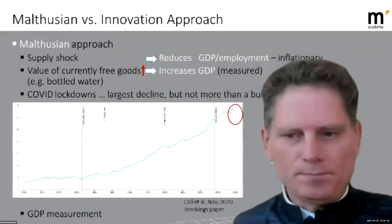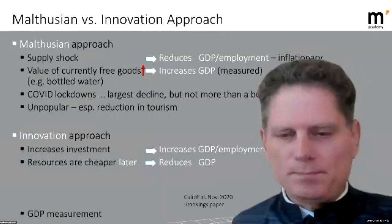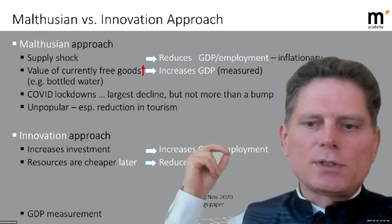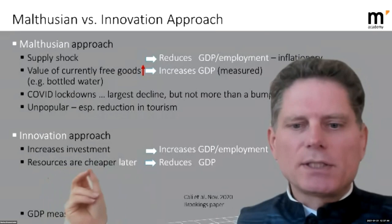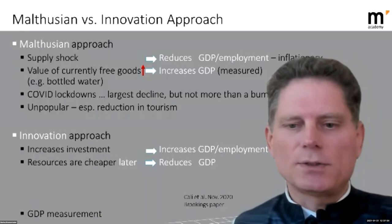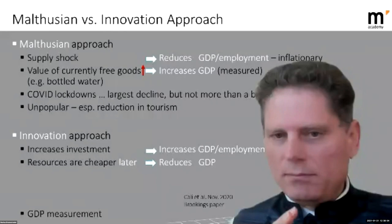The alternative approach is to go for innovation, which will require a lot of investment. The Biden plan would increase GDP by leading to additional employment. On the other hand, it might make some resources cheaper later, which relates to Esteban's flattening-the-curve aspect — you invest a lot today but then there's less to be done down the road. The COVID crisis has discredited the Malthusian approach and highlighted the urgency of innovation.